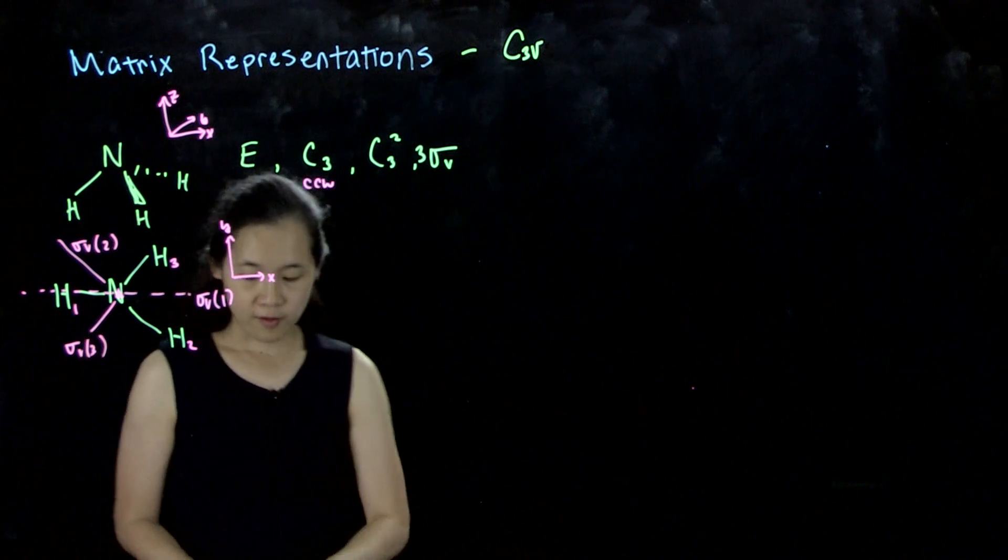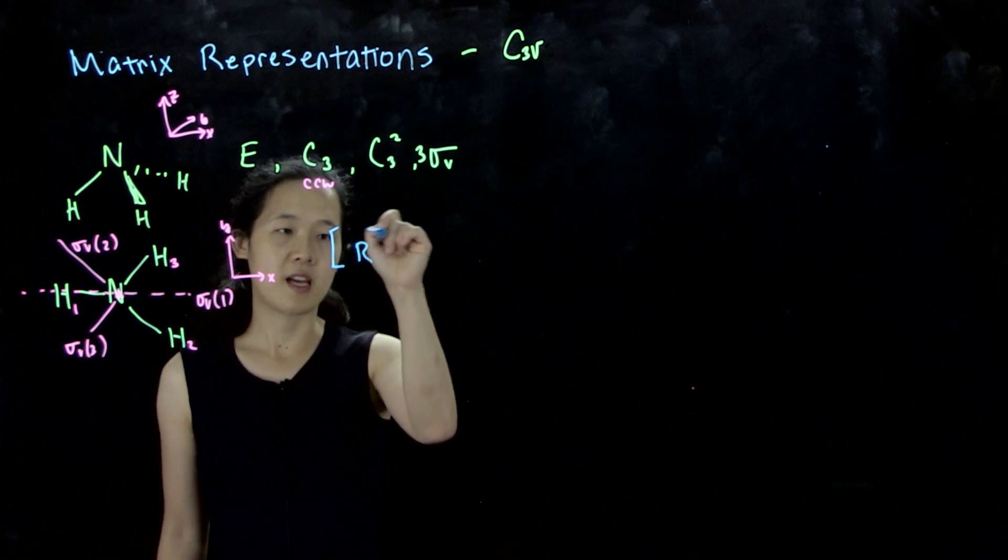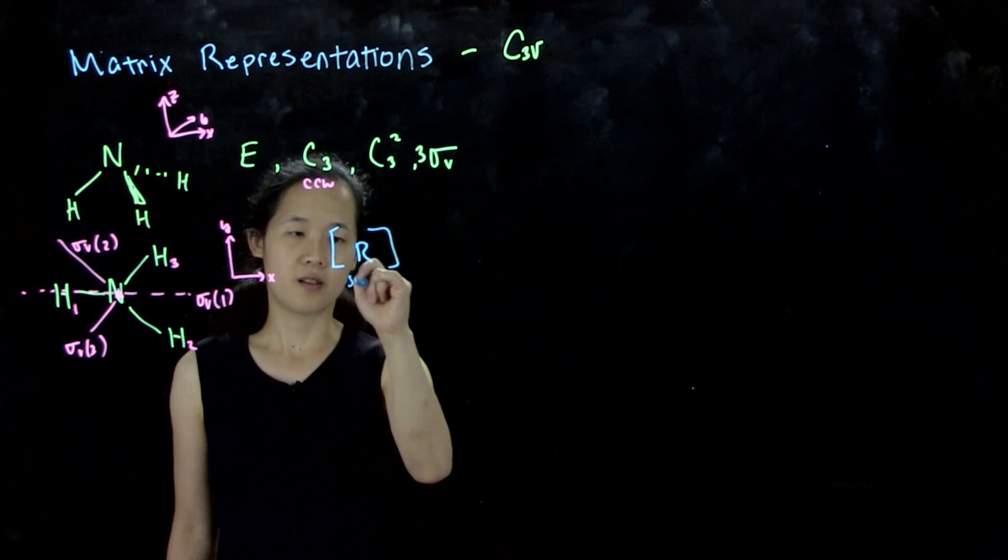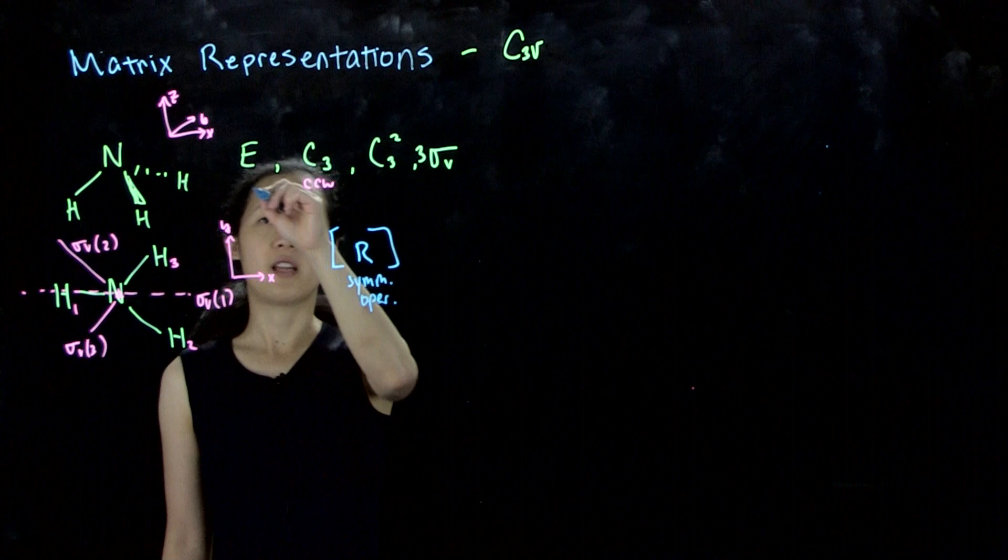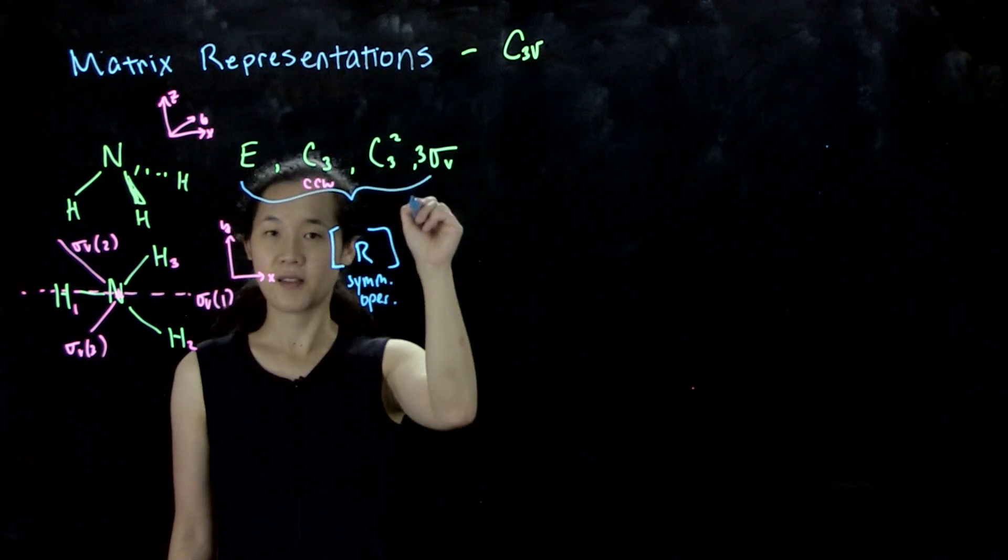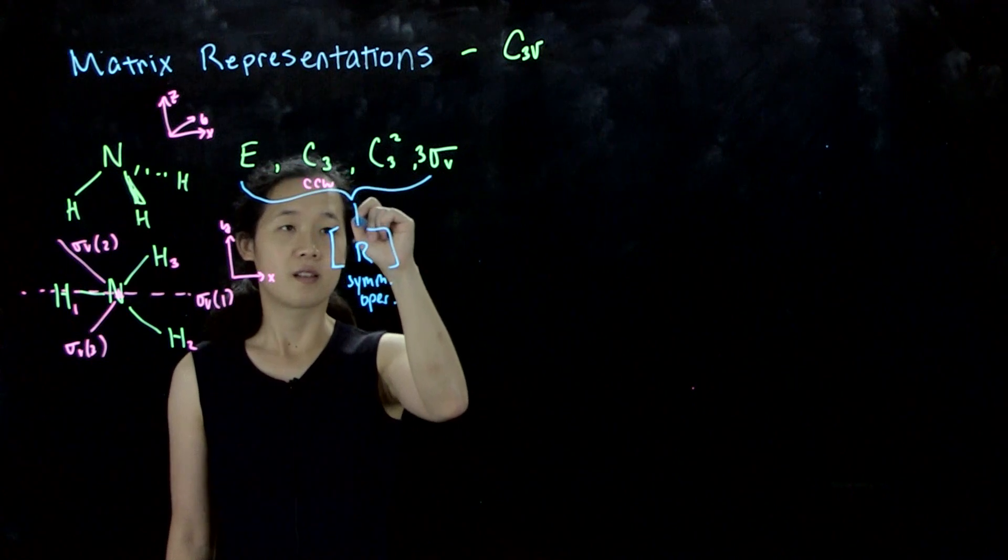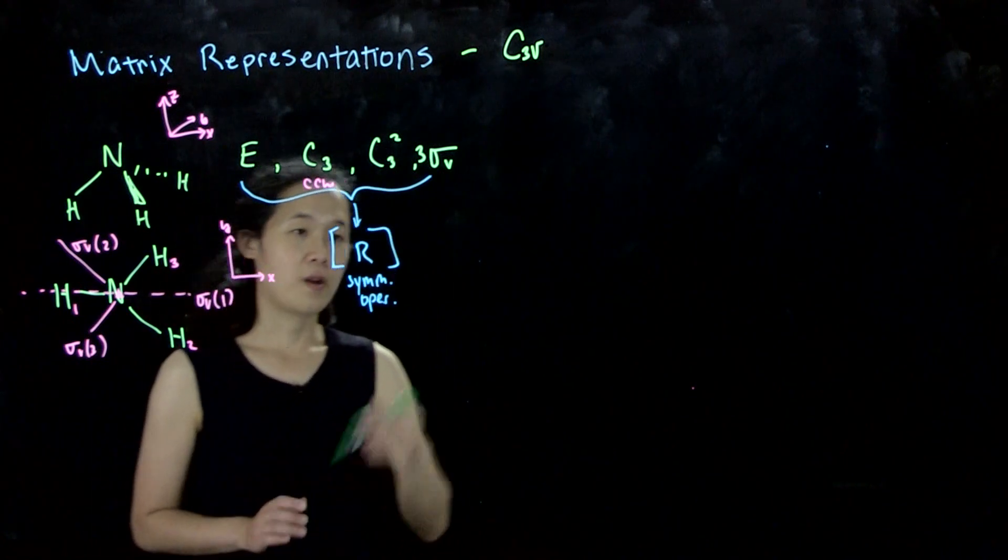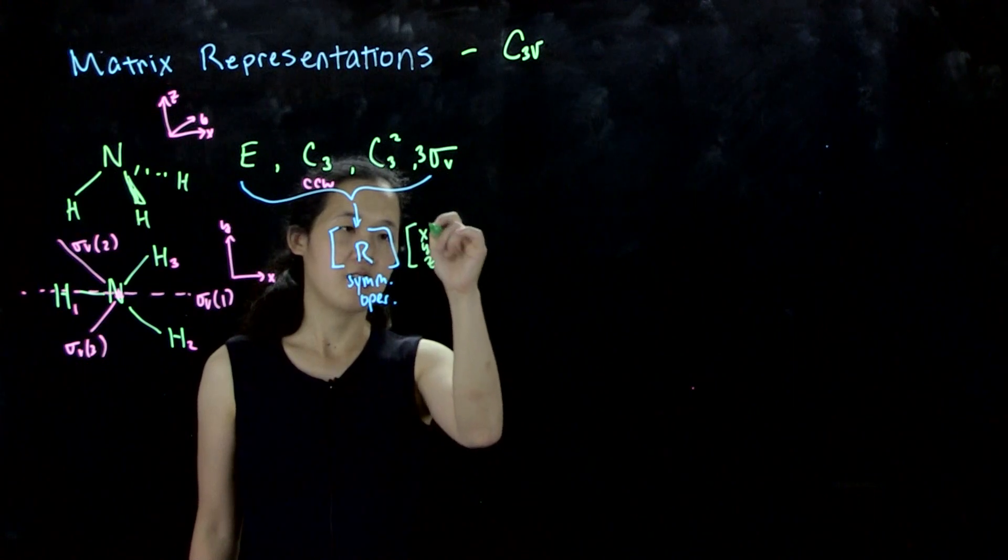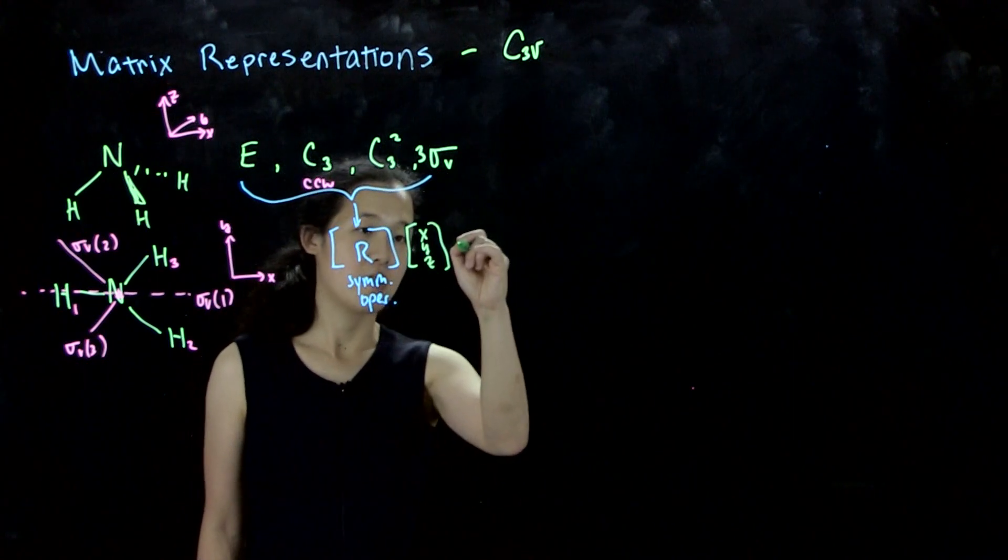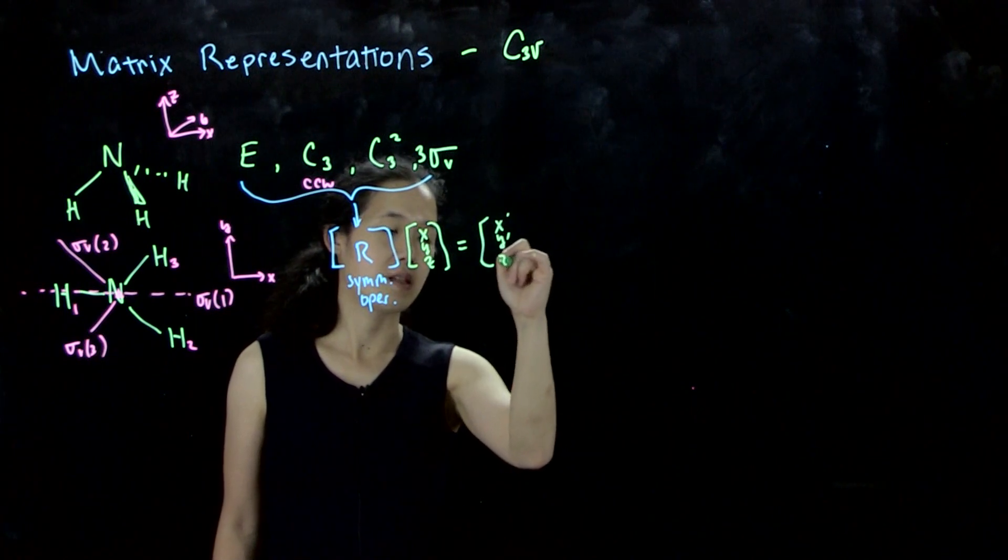What we want to do is figure out how to represent each symmetry operation. We have six of them. We should end up with six three by three matrices that can turn x, y, z into our new x prime, y prime, z prime.